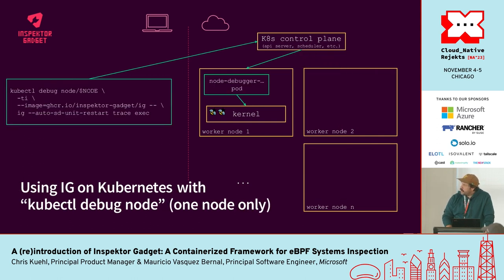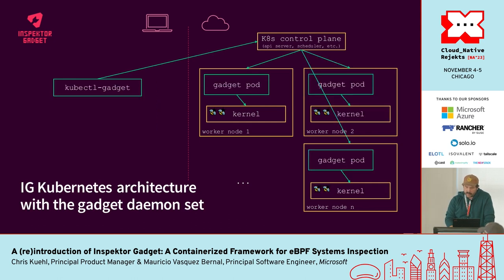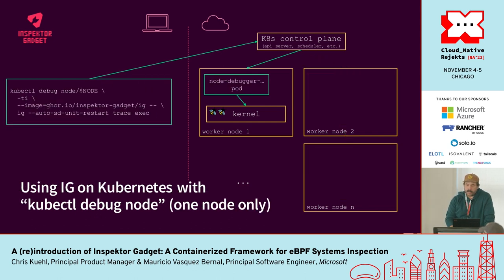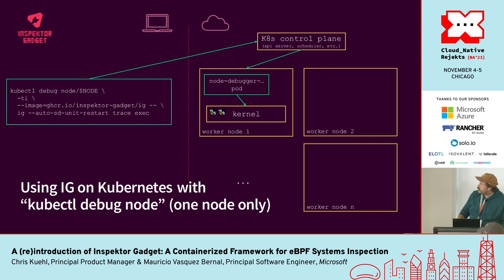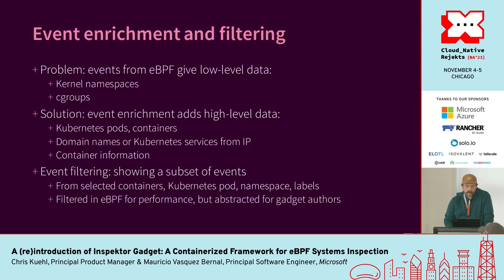Additionally, very recently Kubernetes added a debug node command. Different from the previous mode where you have everything on all the nodes, this allows you to basically debug an individual node. We added support recently for Inspector Gadget to use that, so you can use it using this built-in command in kubectl. So yeah, there are a lot of different ways to use it.